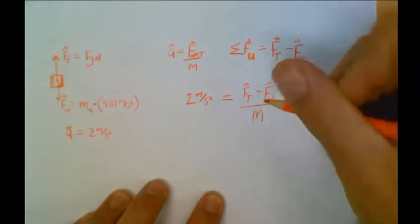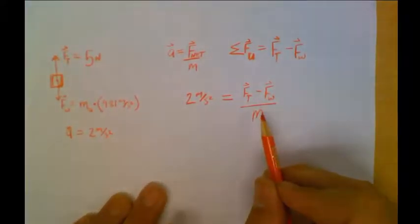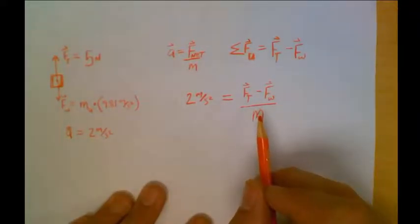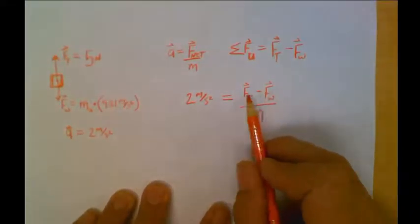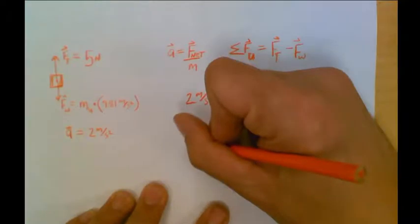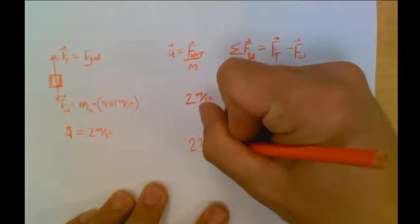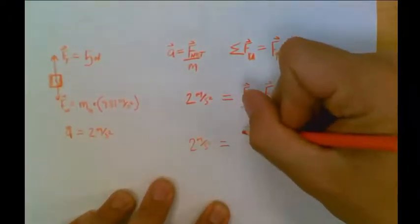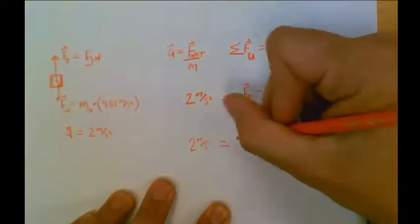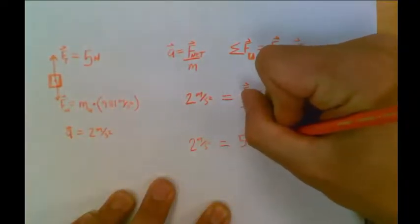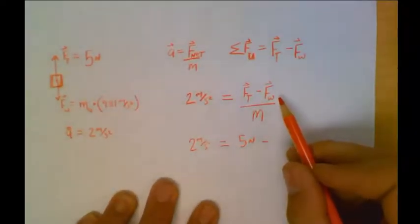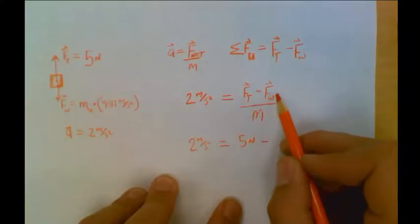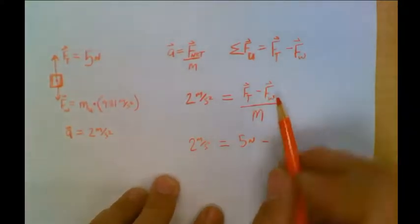And the mass. There's our unknown. If we can solve for this one, that's our answer. So we've got to figure out what do we know up here. Well, let's break this one apart a little bit. And we'll say 2 meters per second squared is equal to the force of tension we know we solved for is 5 newtons minus. Do we know anything about the force of weight? Any known numbers there?